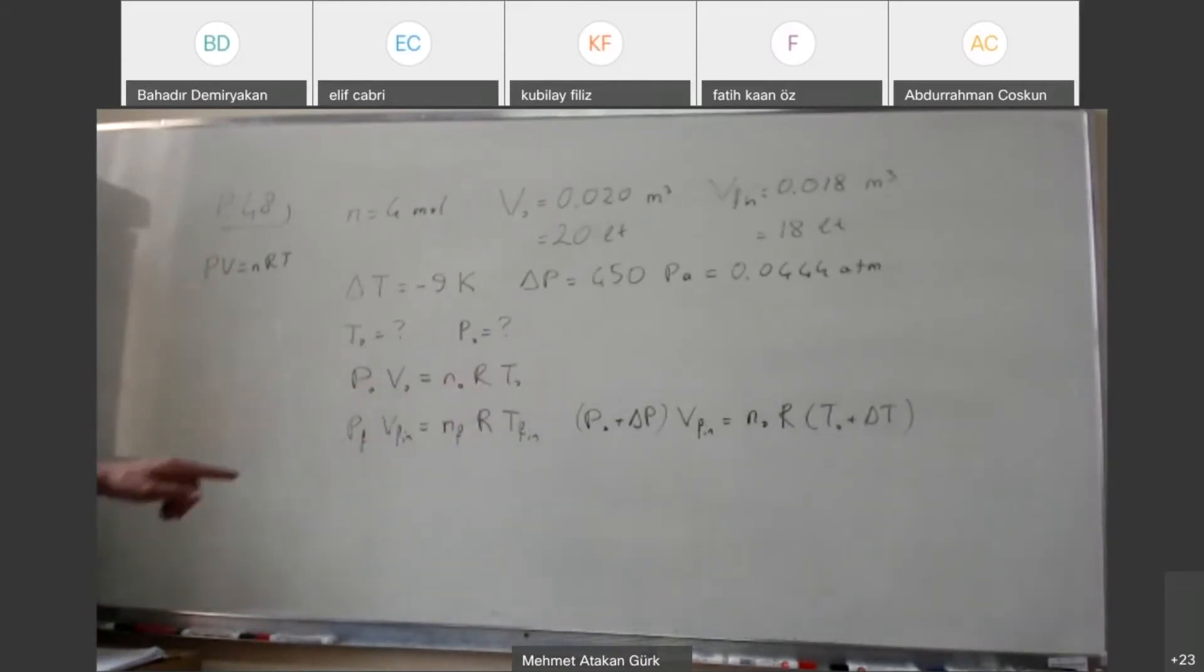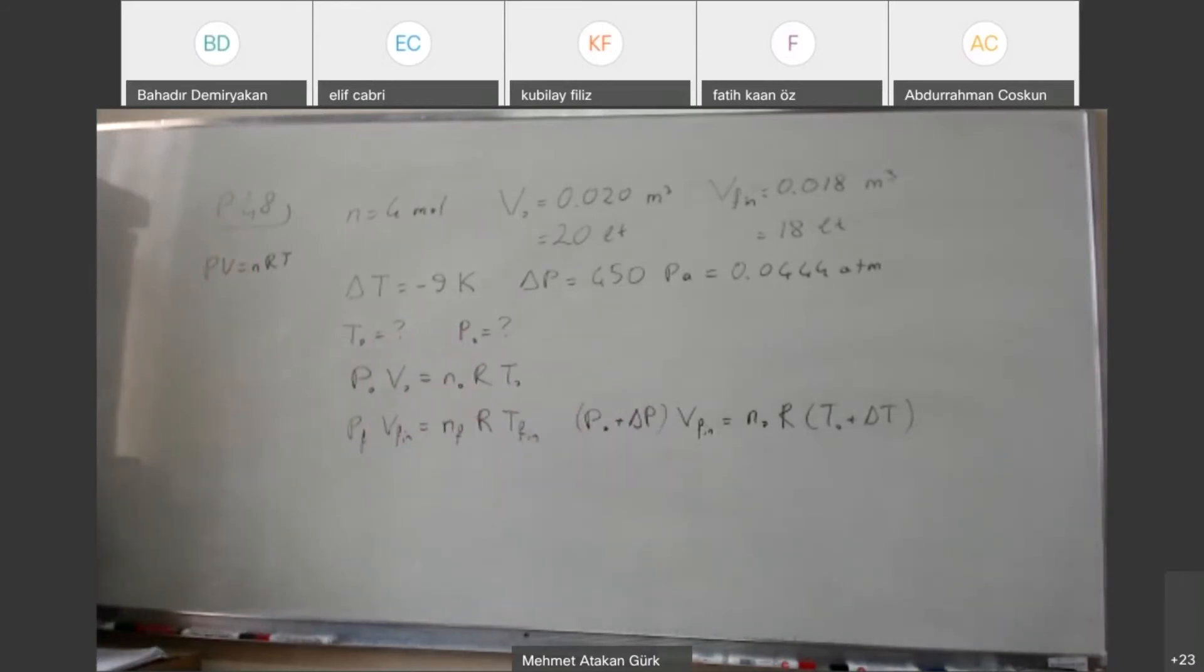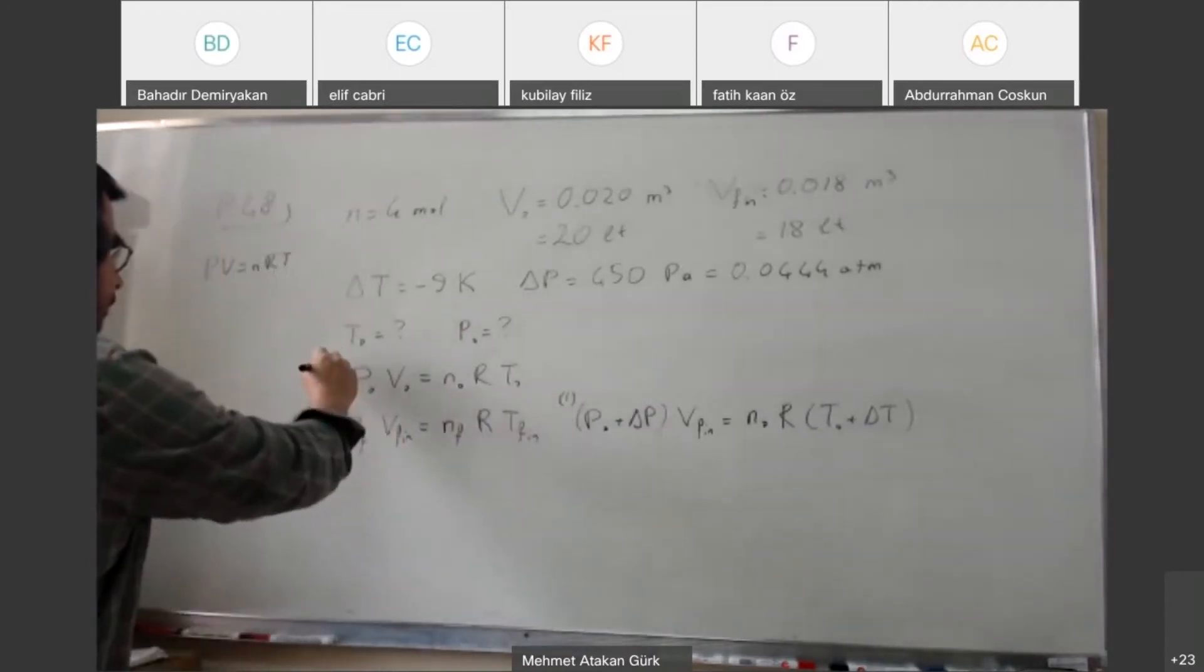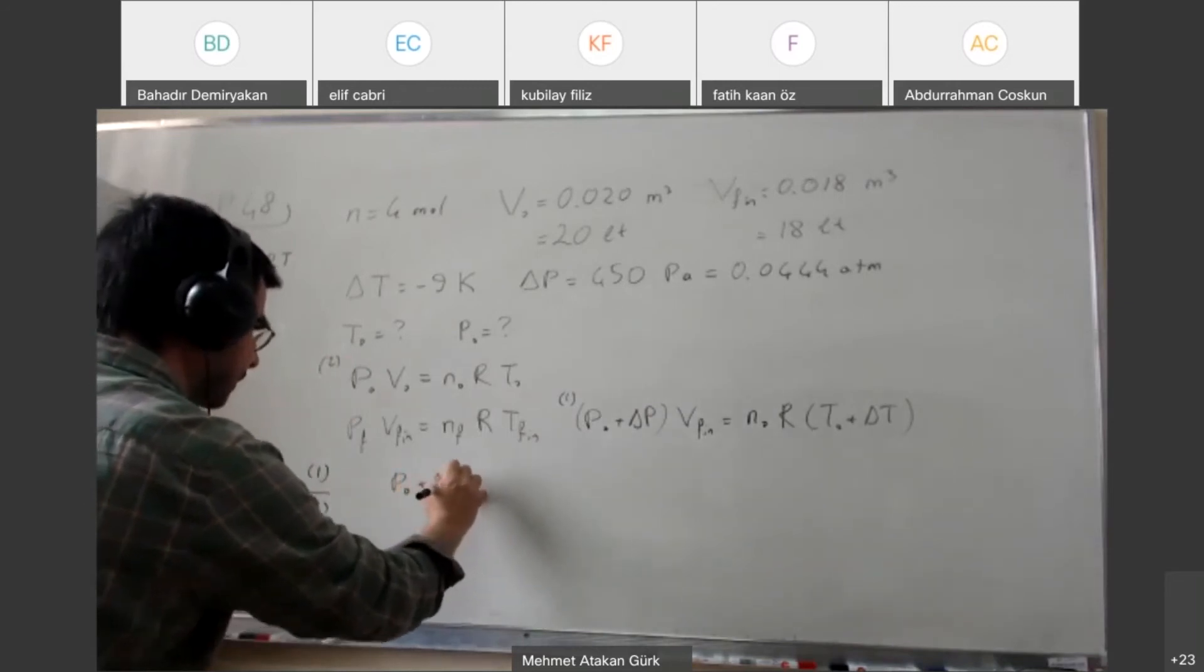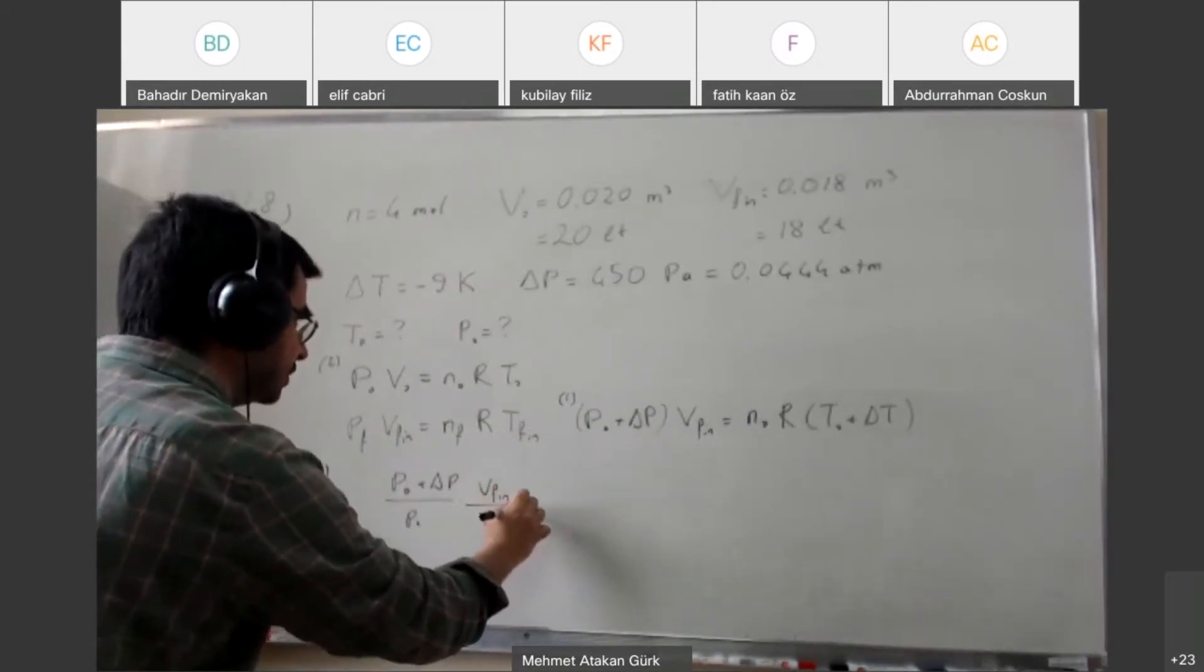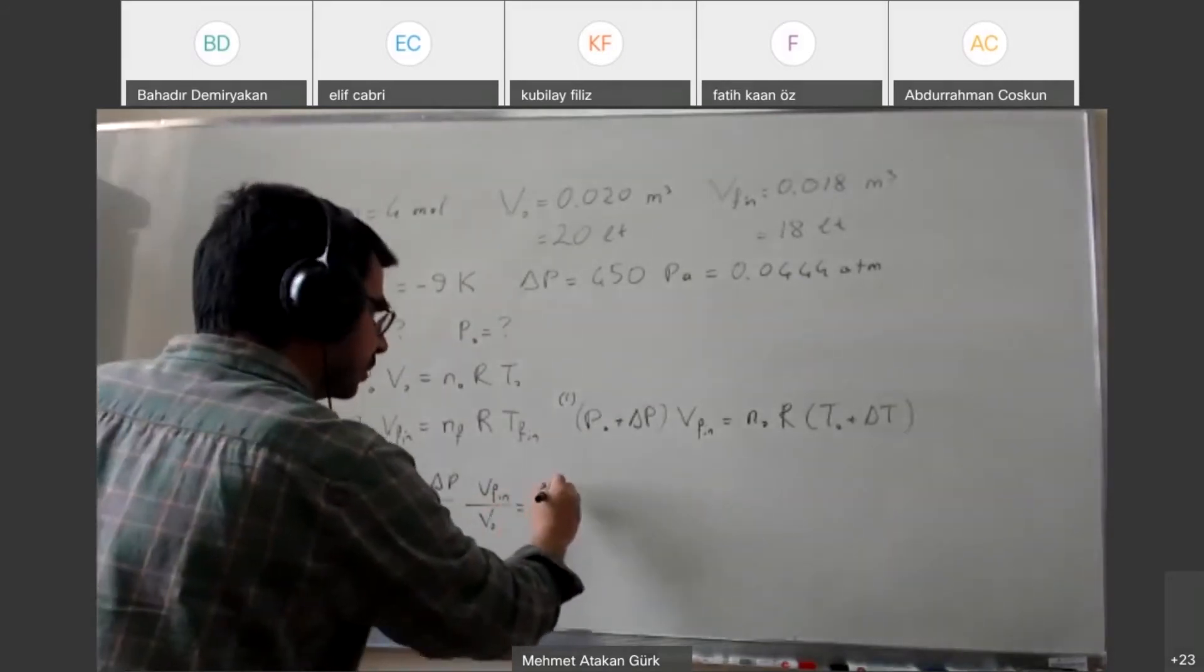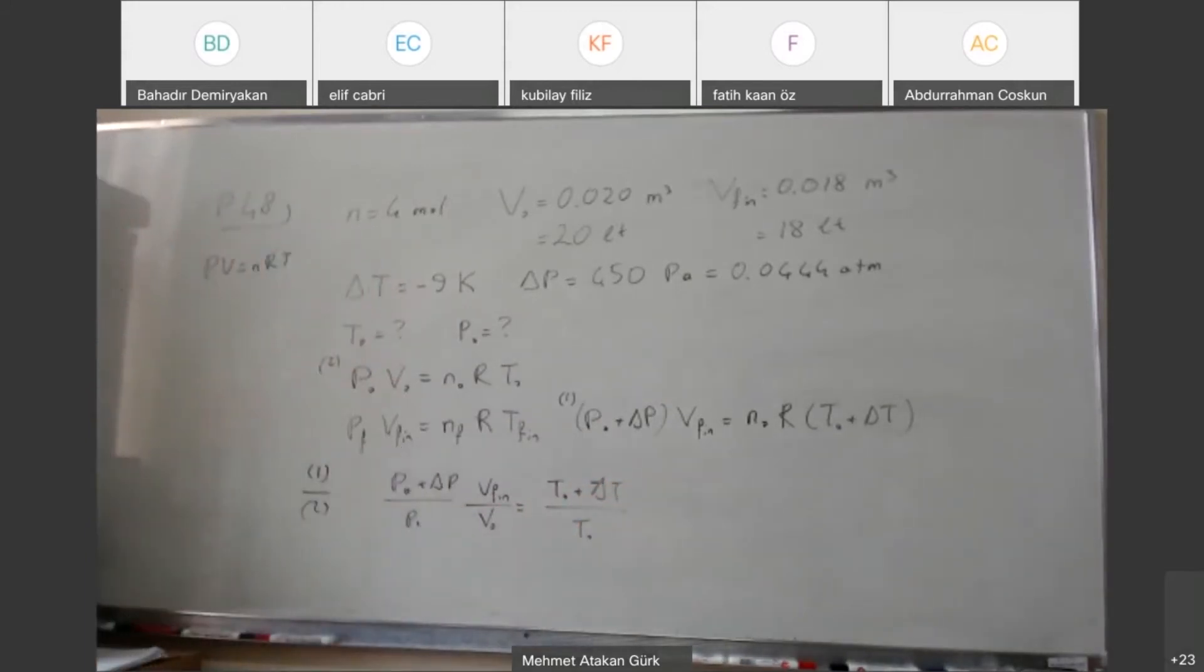This one and this one. Only unknowns here are P0 and T0. Everything else is given, so in principle I should be able to solve this. Now how would you go about solving this? I think dividing side by side looks reasonable. So let's call this one and let's call this two and divide one by two.